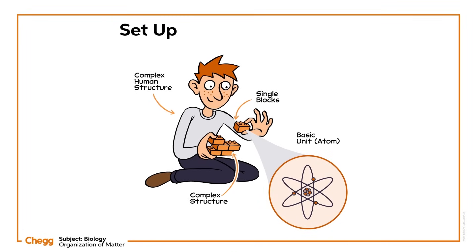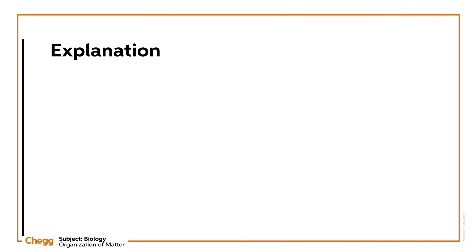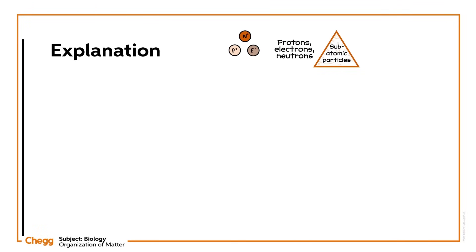Atoms are the basic building blocks of all life. They're tiny particles with a diameter of about 100 picometres. They're so small, in fact, that a single sheet of paper is around half a million atoms thick. But atoms aren't the smallest building blocks. Atoms themselves are composed of three major subatomic particles: protons, electrons and neutrons.